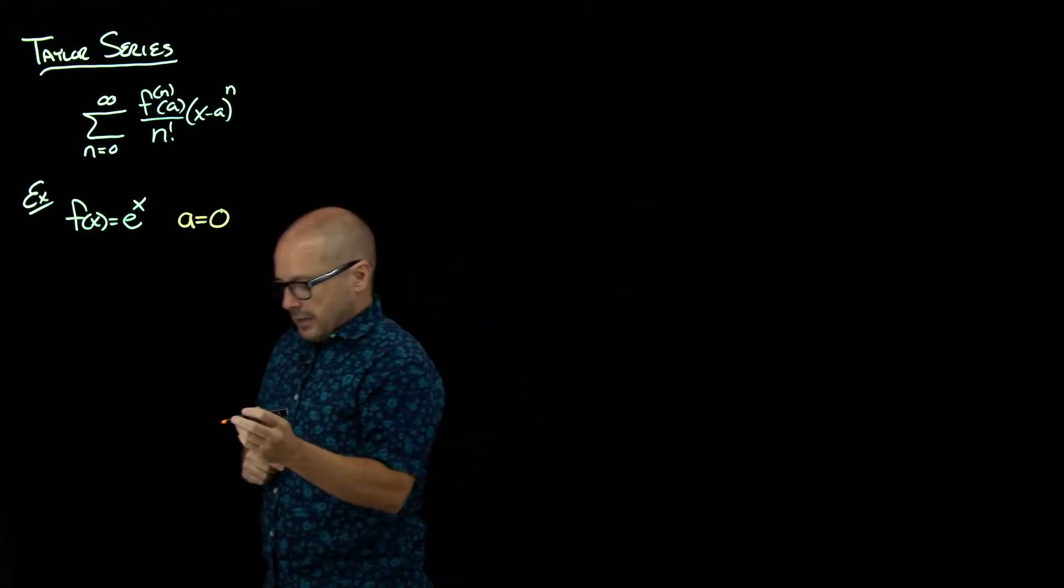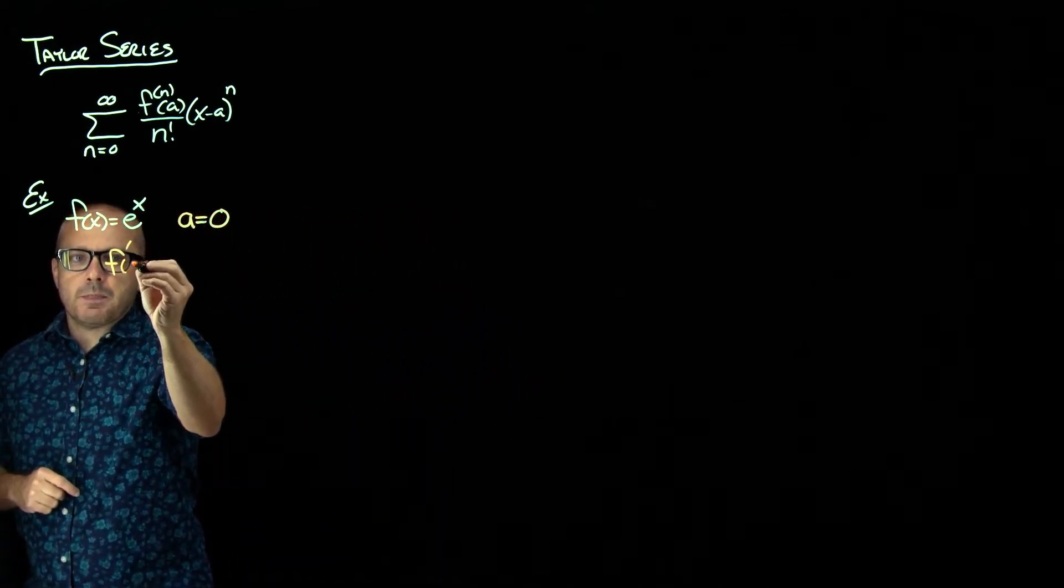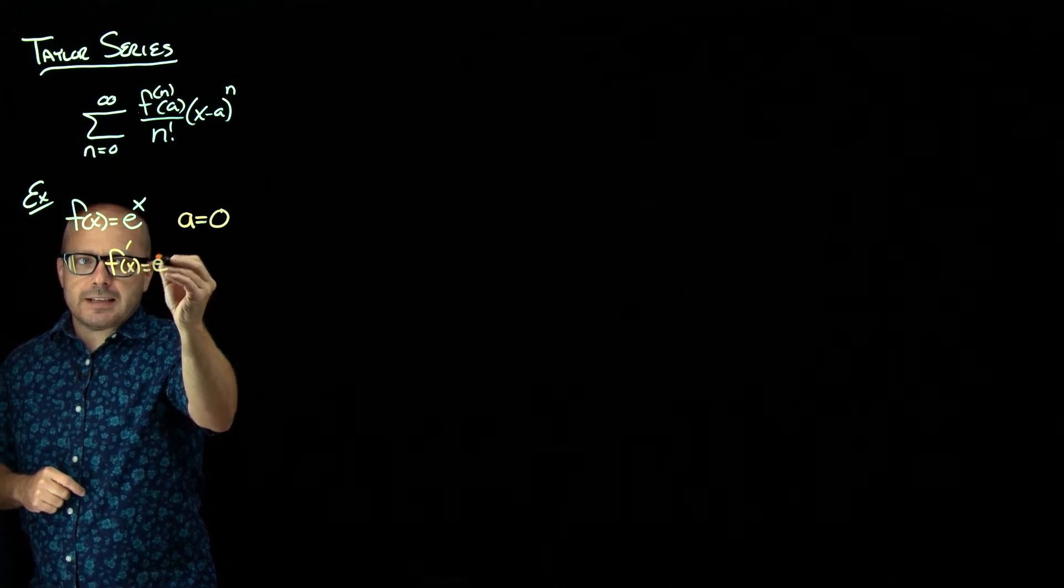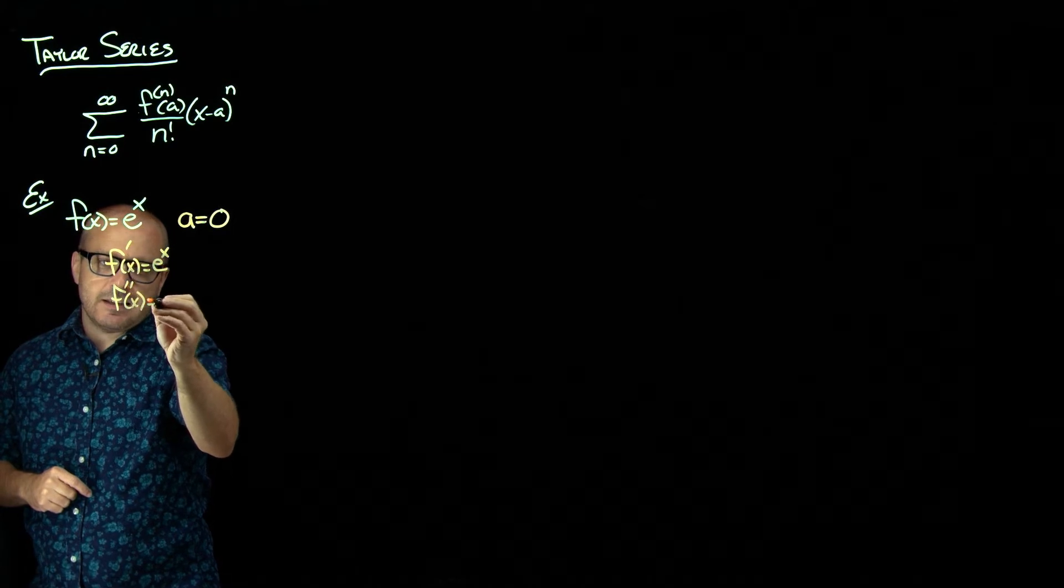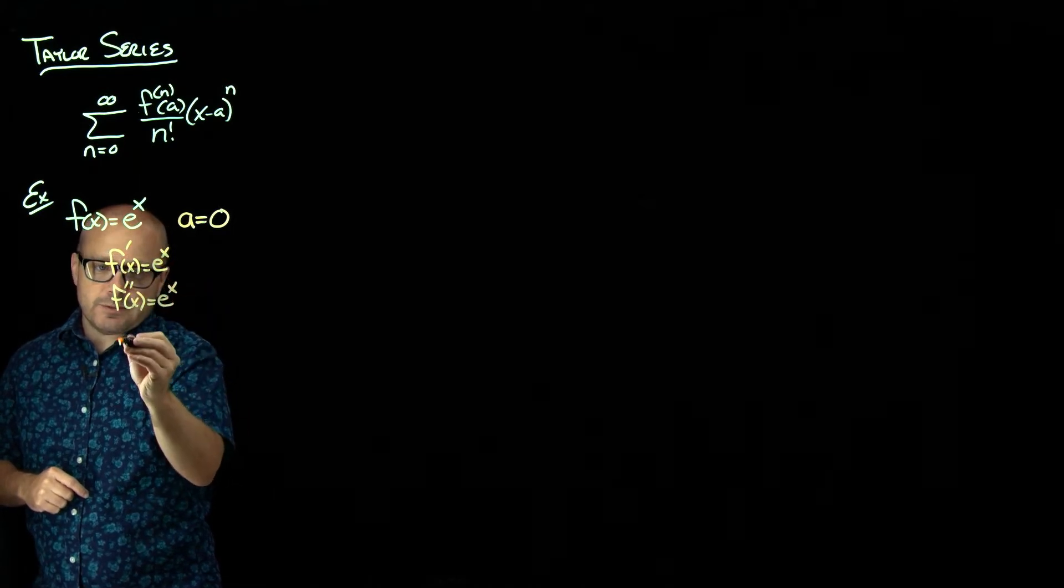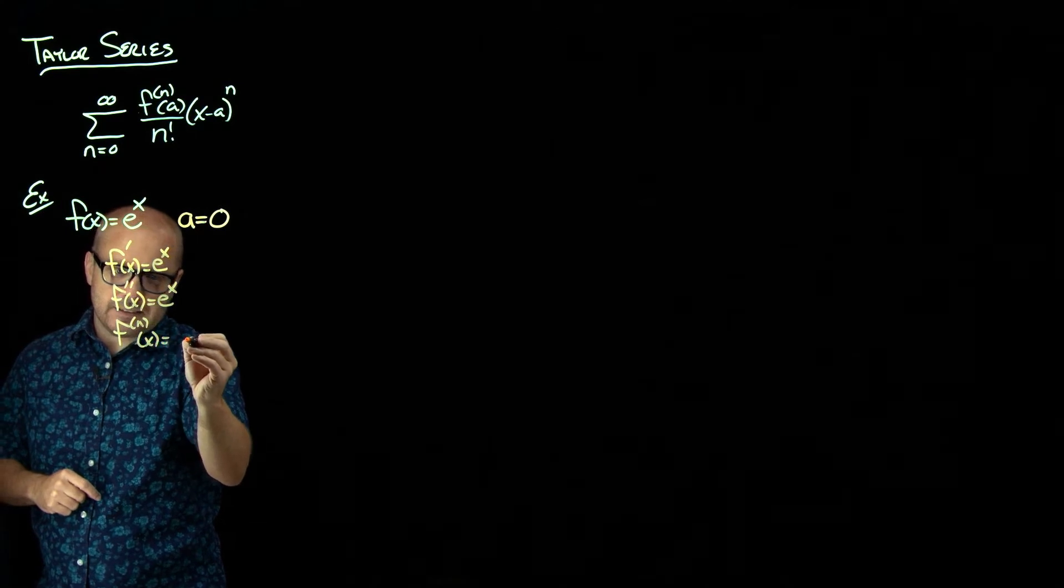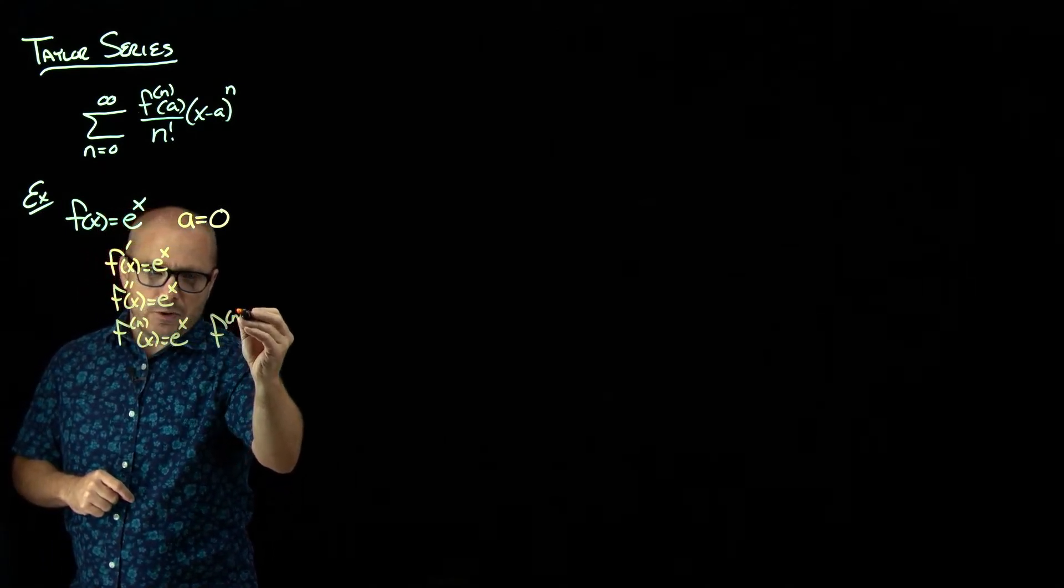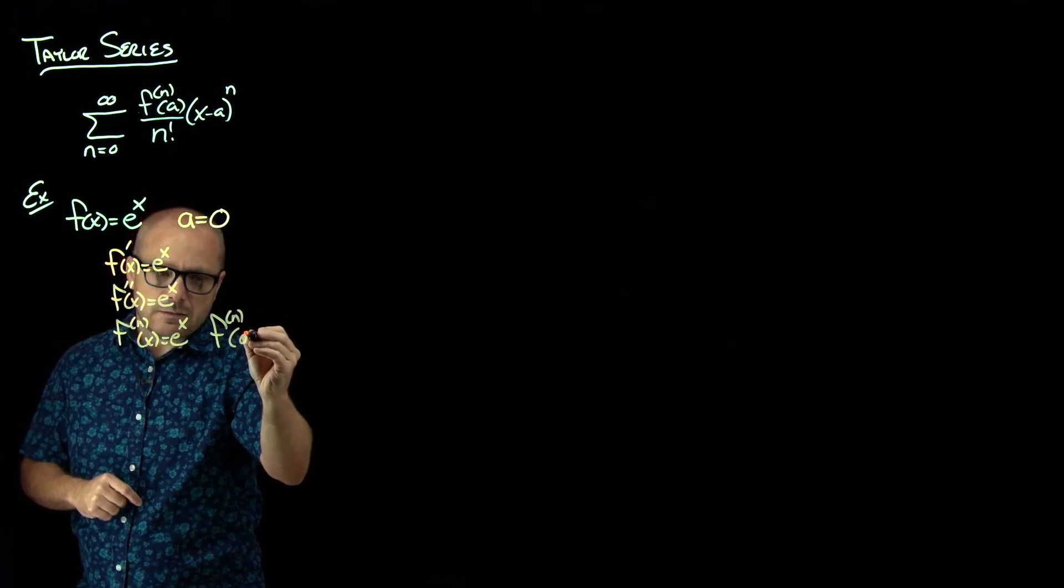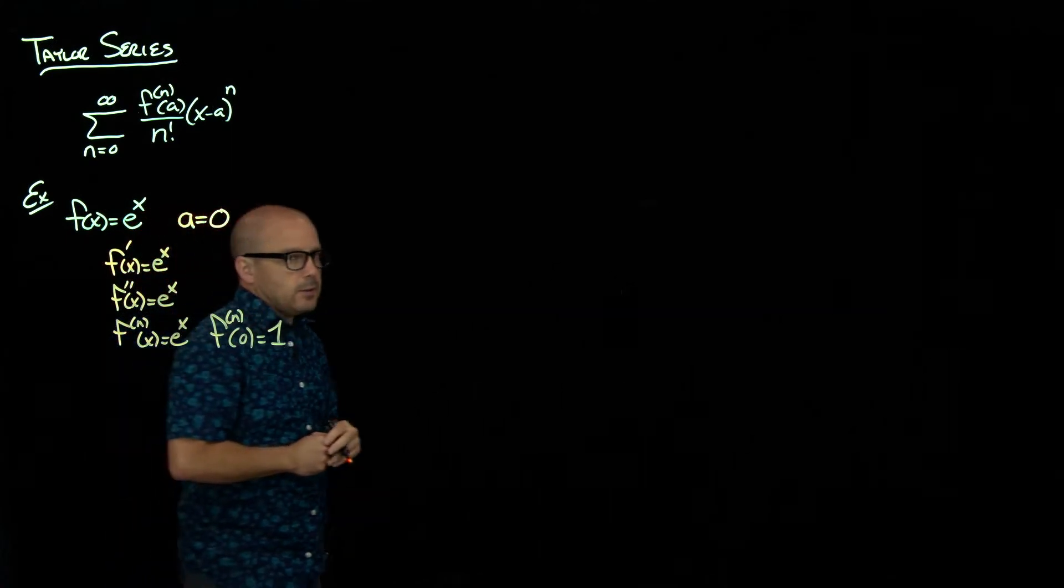Well, that's the beauty of e to the x. It doesn't take long. We know the derivative of e to the x is e to the x. Therefore, the second derivative is e to the x, and all derivatives are e to the x.